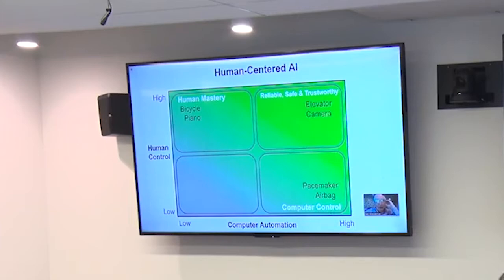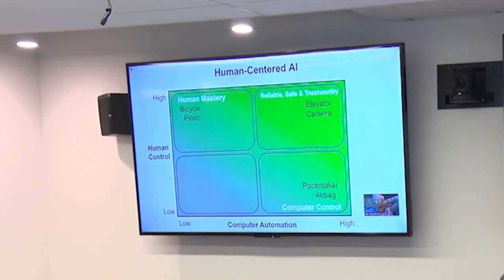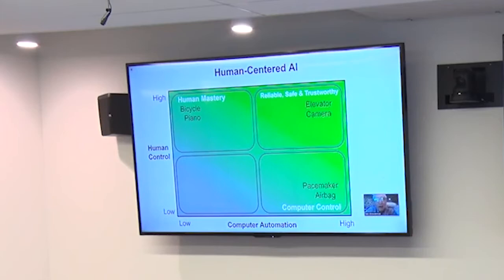This two-dimensional chart shows the landscape of different possibilities. Full computer control — autonomous systems — is only necessary in very narrow cases, and even then we want to limit autonomy and ensure it's monitored. For example, airbags save about 2,500 lives in the US per year, but in the early days they inadvertently killed about 200 children and elders due to inappropriate deployments. The result was better design because we had data about what went wrong. Collecting data and ensuring reliability, safety, and trustworthiness moved the airbag system toward that ideal. Similarly, pacemakers are increasingly monitored and patients tracked, so we know how well they're working.